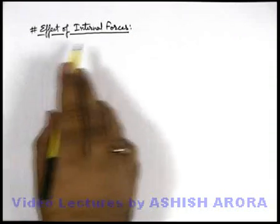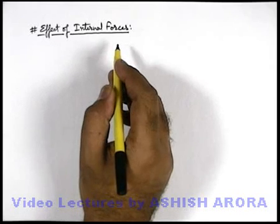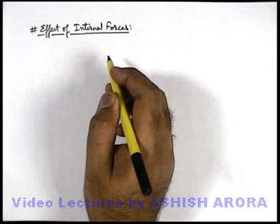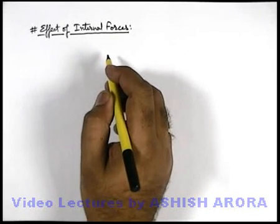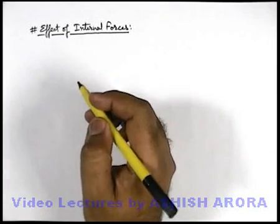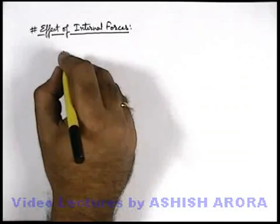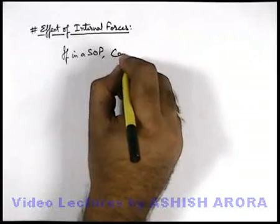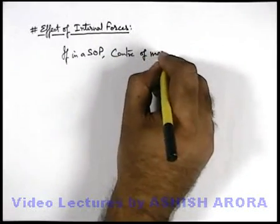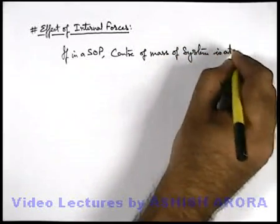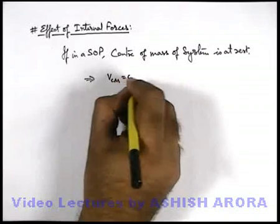Let us now discuss the effect of internal forces on a system of particles. As we have just now studied, the law of conservation of momentum states that in the absence of external forces, the system momentum will remain constant. Now, if in a system of particles the centre of mass is at rest, that implies the velocity of centre of mass is equal to zero.